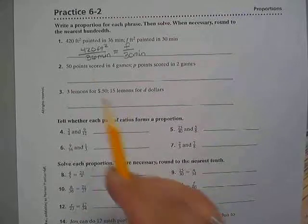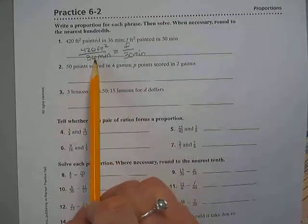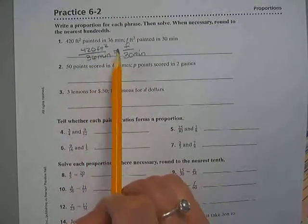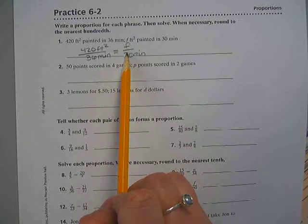You see how we set that up? 420 over 36 is the same as F over 30.